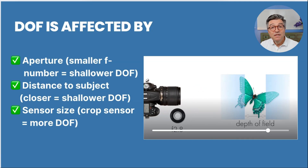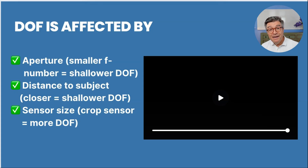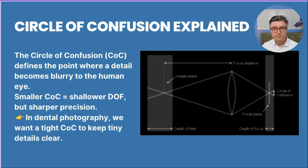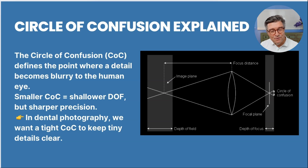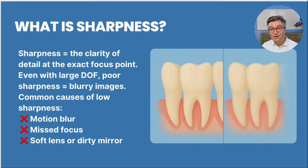We talked about sensor size — a cropped sensor gives you more distance and more depth of field. That's why I recommend using your full frame camera in crop mode for intraoral photography if you are struggling with depth of field. The circle of confusion describes how from the line where your image is sharp, you lose sharpness to either side. Sharpness is the clarity at the exact focus point.